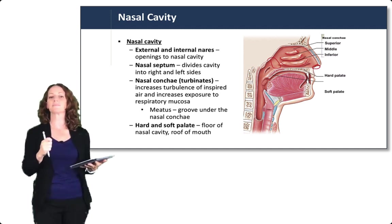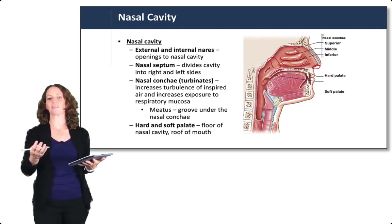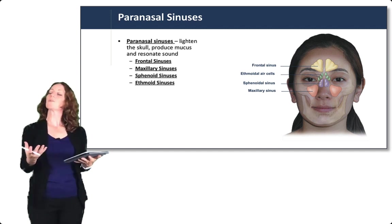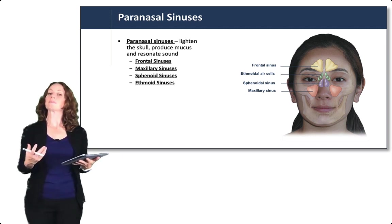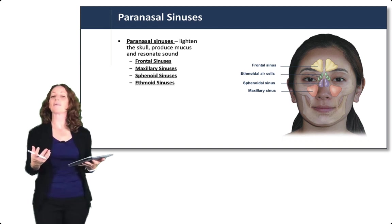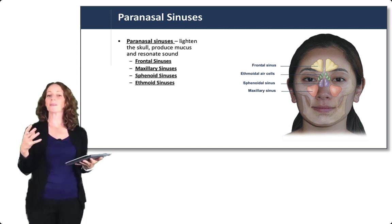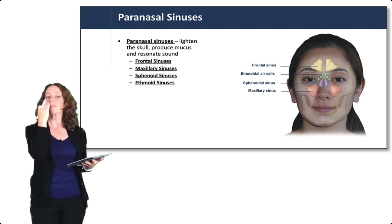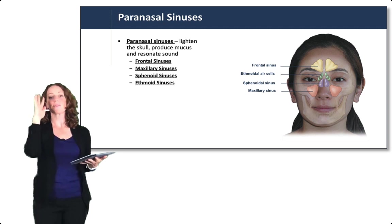The boundaries of the nasal cavity are the hard and soft palate inferiorly and the sphenoid and ethmoid bones superiorly. The sinuses are openings within the skull bones that produce mucus, resonate sound, and also lighten the skull. They are named for the bones in which they lie: the frontal sinuses within the frontal bone, the maxillary sinuses within the maxilla, the sphenoid sinuses within the sphenoid bone, and the ethmoid sinuses — also known as ethmoid air cells — within the ethmoid bone.